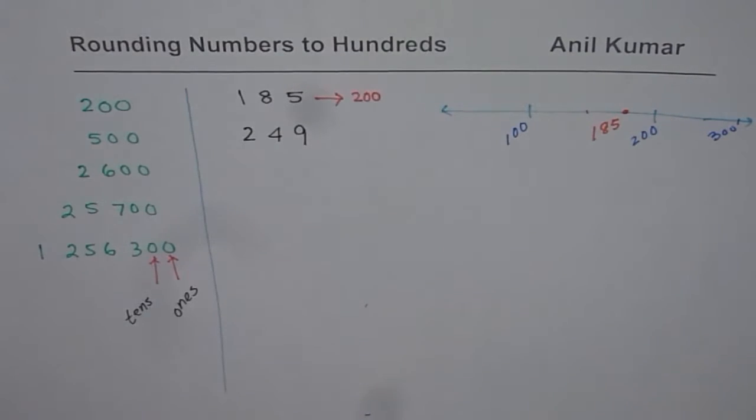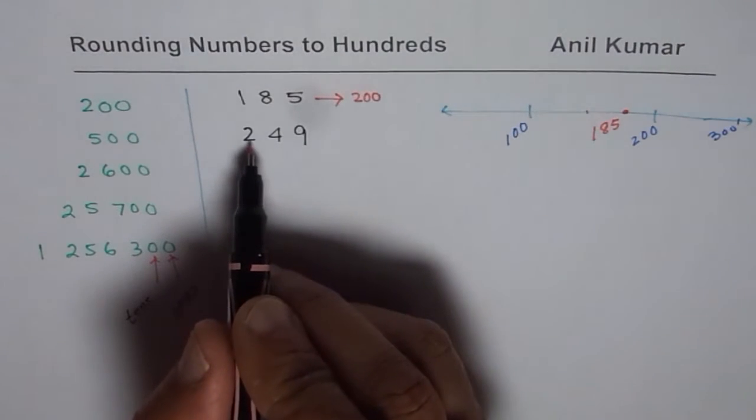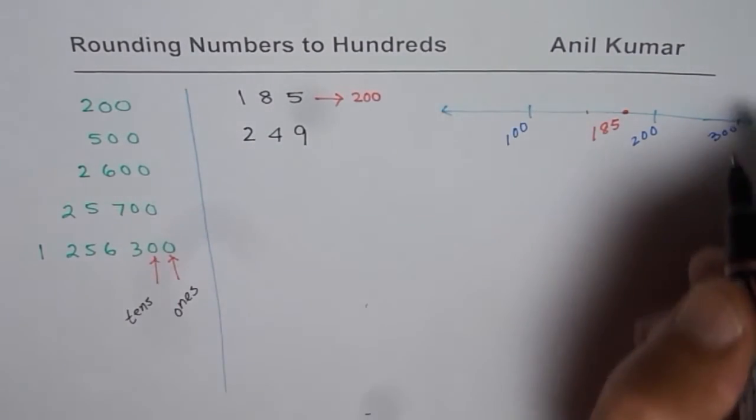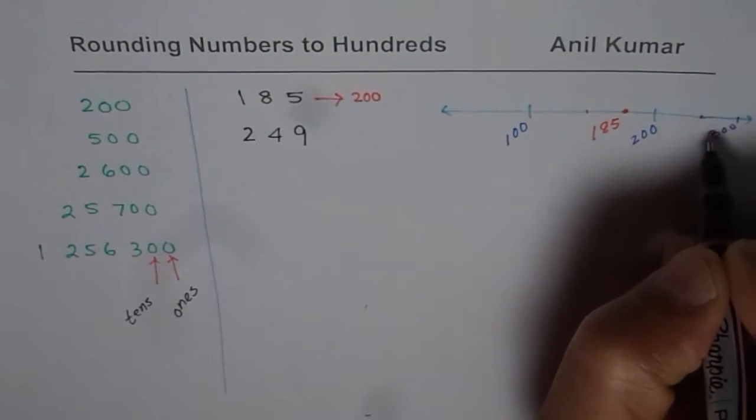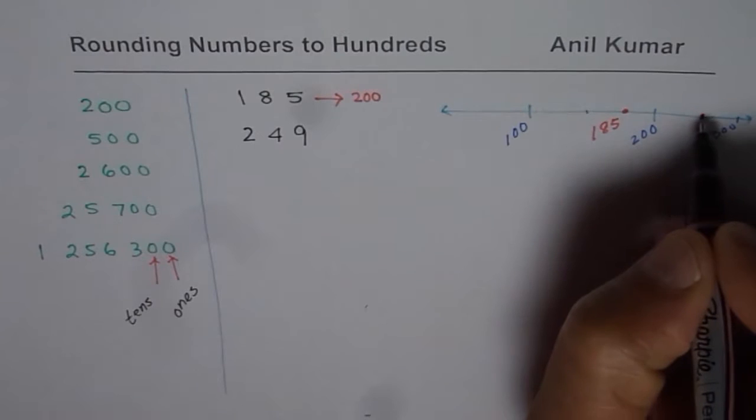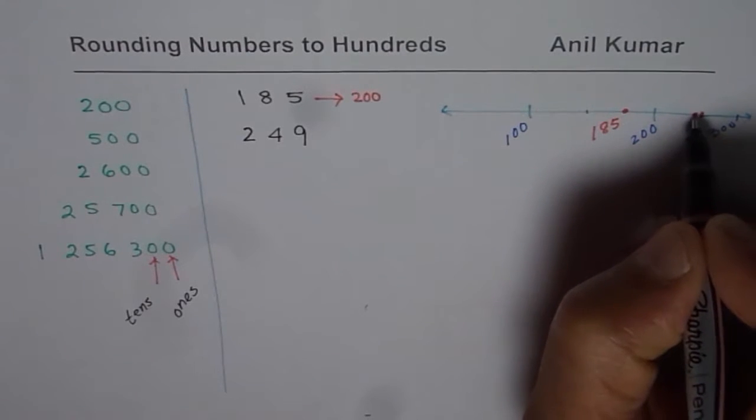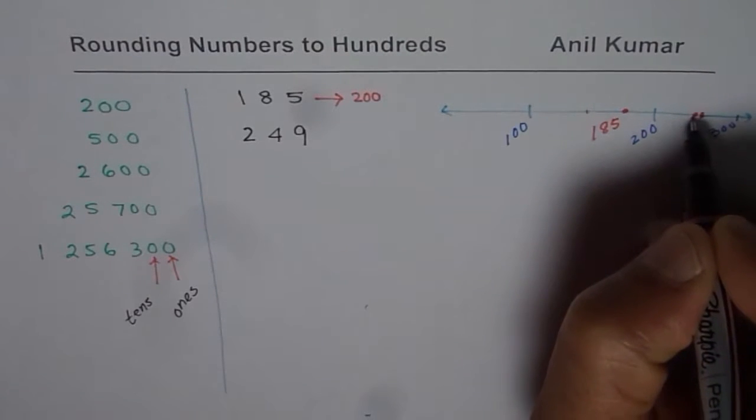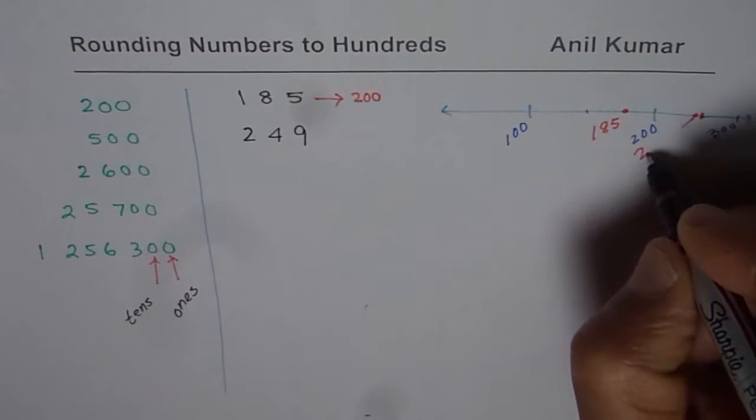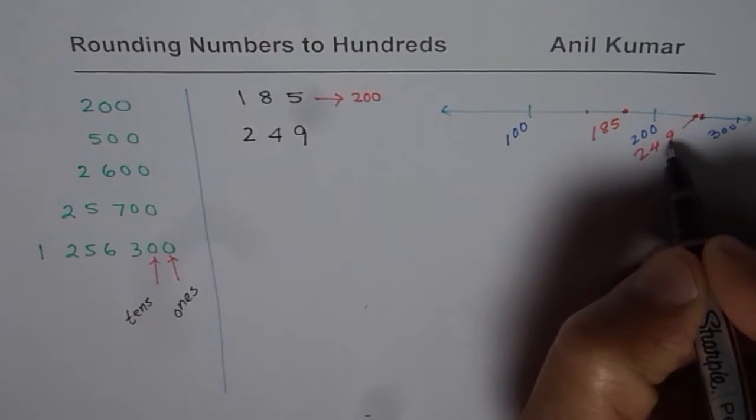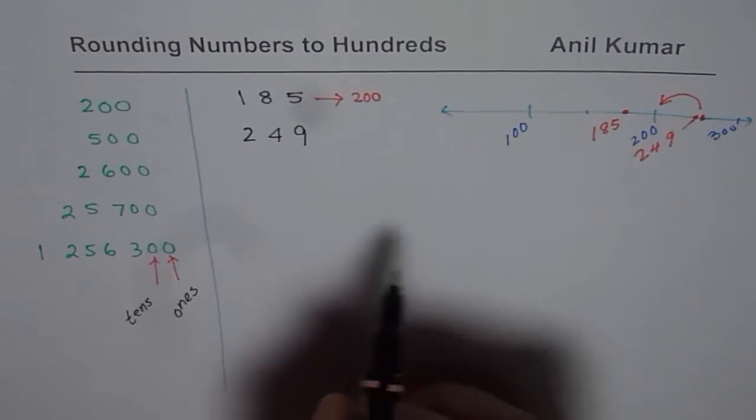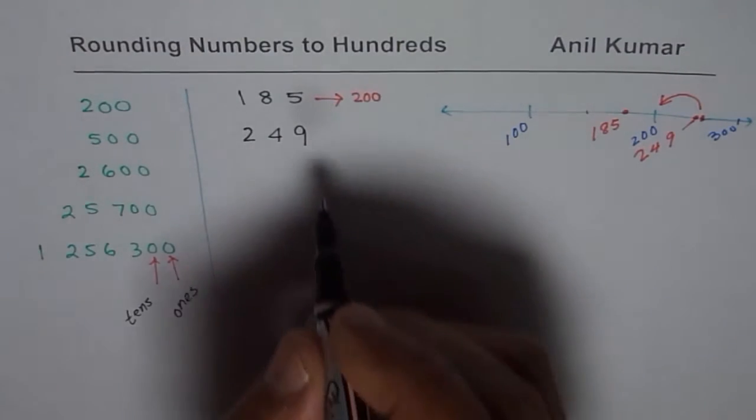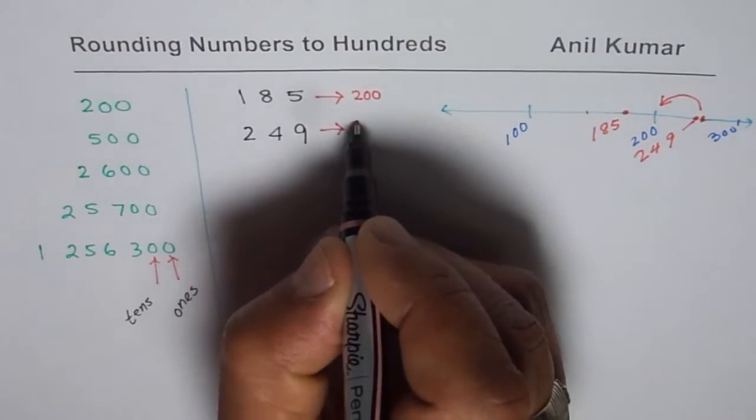On the other hand, if you consider the number 249, it is midway, almost midway, but closer to 200. Let's say this is 250, so the number is slightly before that. So that is the number which could be 249. Since this is closer to 200, it also rounds to 200. So these numbers, we see, they round to 200.